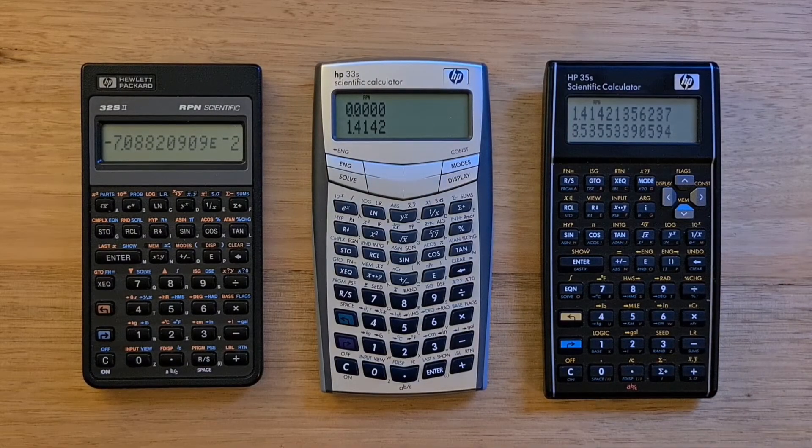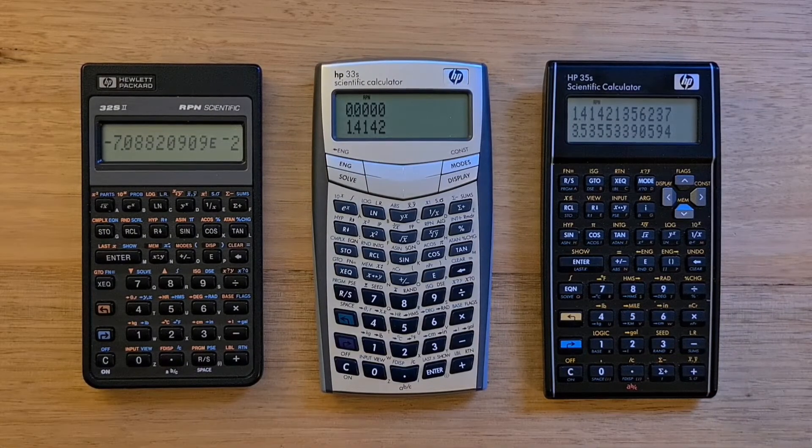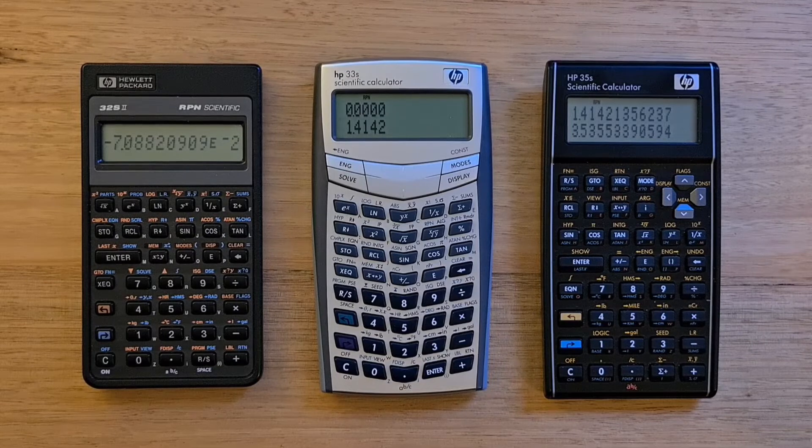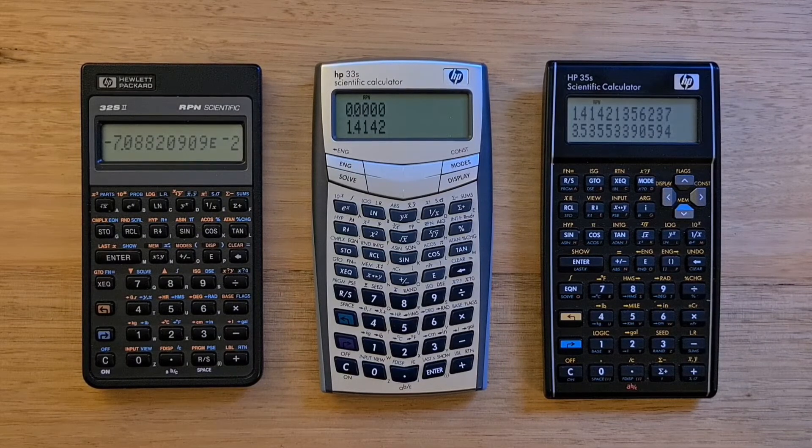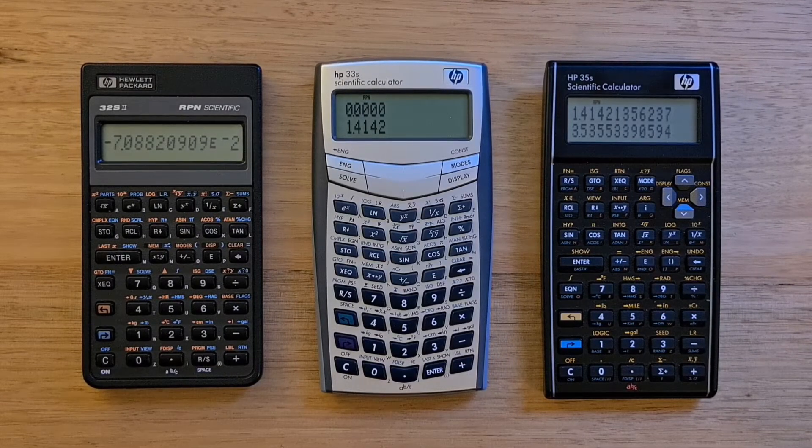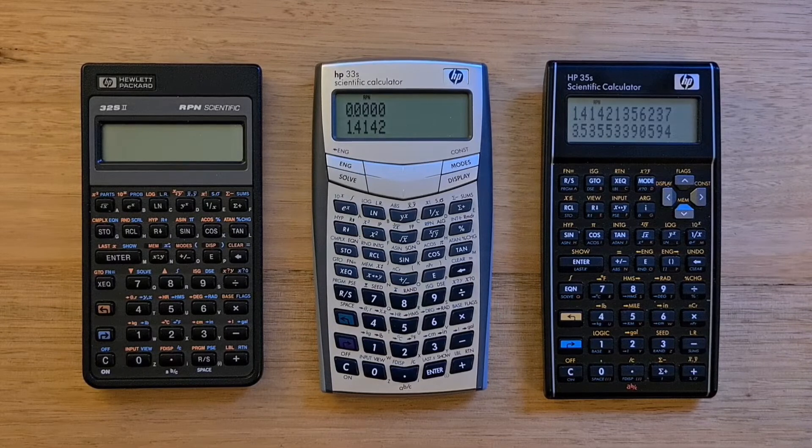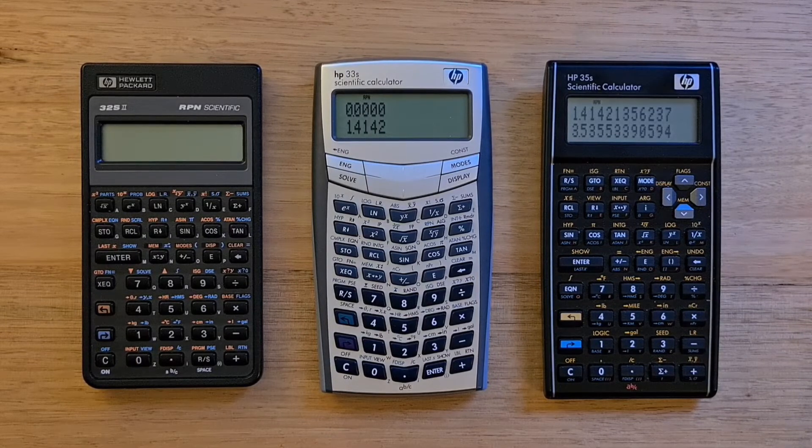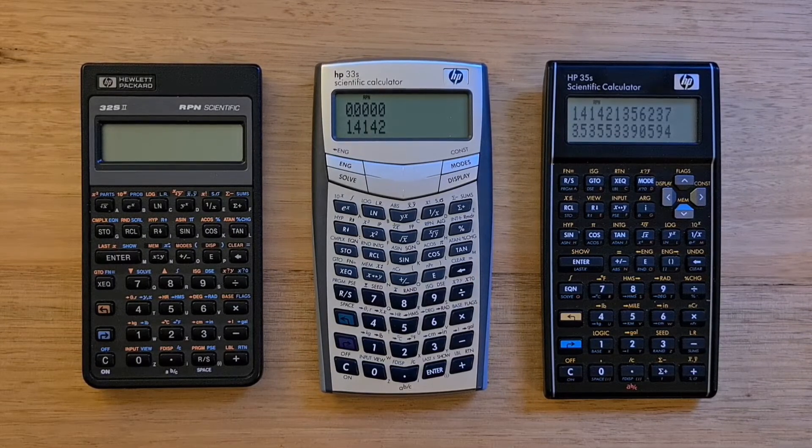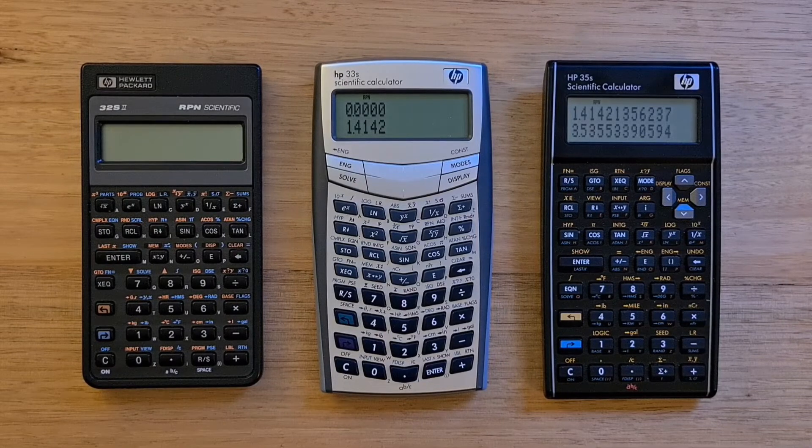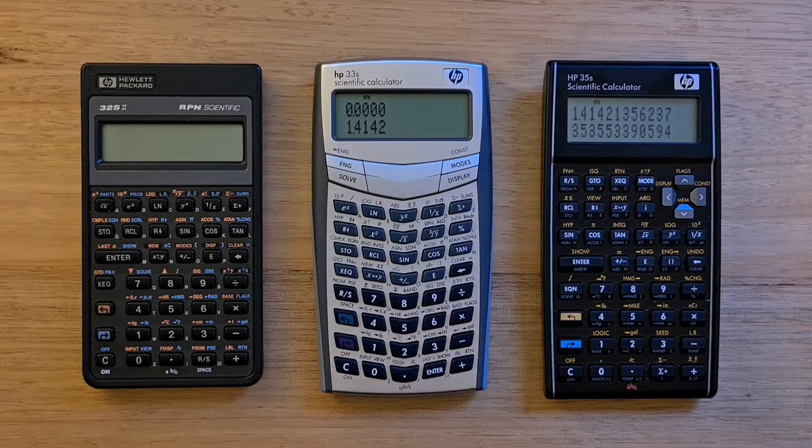Complex numbers is another capability that evolved over time. With the 32S2 and 33S, they support complex arithmetic, but in a rather awkward way. To enter a complex number, you enter the imaginary part into the Y register and the real part into X. This order takes some getting used to.